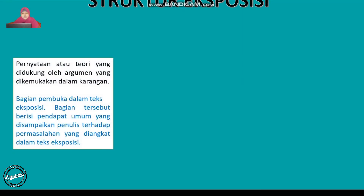Struktur teks eksposisi yang pertama adalah tesis. Tesis bisa dikatakan sebagai pernyataan umum atau bagian awal atau bagian pembuka dari sebuah teks eksposisi. Tesis merupakan pernyataan atau teori yang didukung oleh argumen-argumen yang dikemukakan dalam karangan, khususnya di dalam teks eksposisi. Bagian pembuka ini berisi pendapat umum atau pernyataan umum yang disampaikan oleh penulis terhadap permasalahan yang dibahas atau diangkat dalam sebuah teks eksposisi.